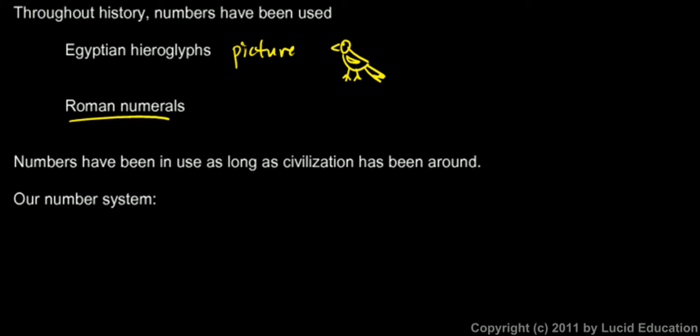You're probably familiar with Roman numerals, where they use a capital I for a one, two I's for a two, three for a three. For a four, you could either do four of them like that, or you could do IV for a four. Then a V for a five. This is another system of numbers.